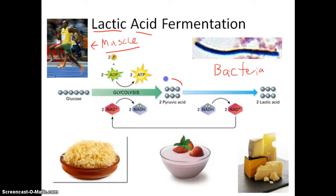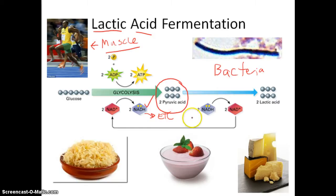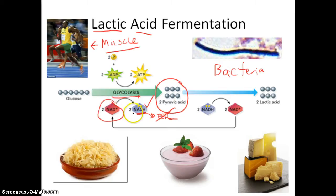We get to pyruvic acid, and then we arrive at a problem in this biochemical pathway. We've made a lot of full electron carriers — a lot of NADHs. Comparing anaerobic and aerobic conditions, these NADHs normally go to the ETC, where electrons are drawn through that chain of protein carriers by oxygen. But in anaerobic conditions there is no oxygen, so the ETC is out. There's nowhere for these NADHs to go, and in order for glycolysis to continue, you need to keep regenerating NAD+.